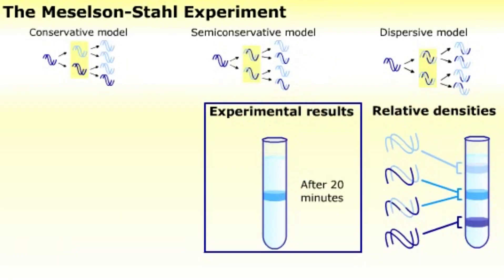The DNA extracted after 20 minutes was of intermediate density. Which model do the results rule out? Click Submit to see if you're correct.